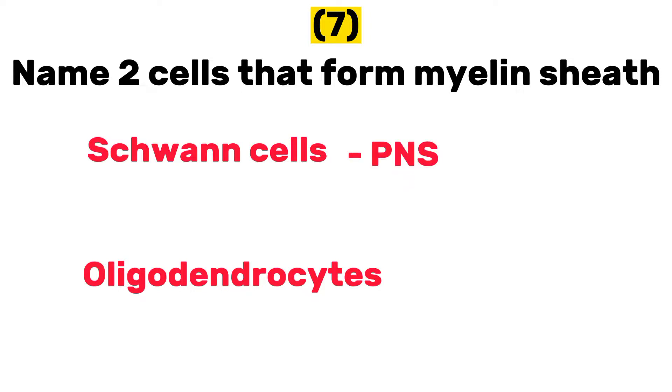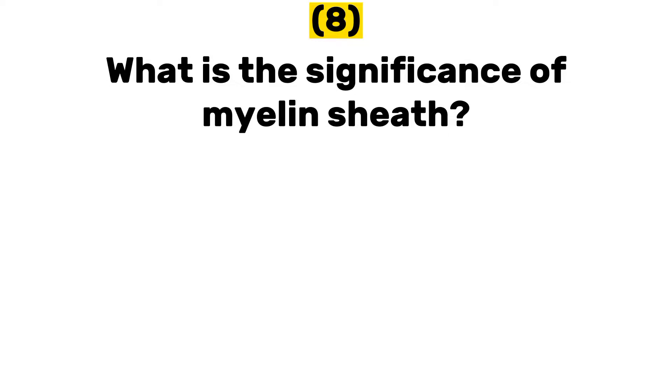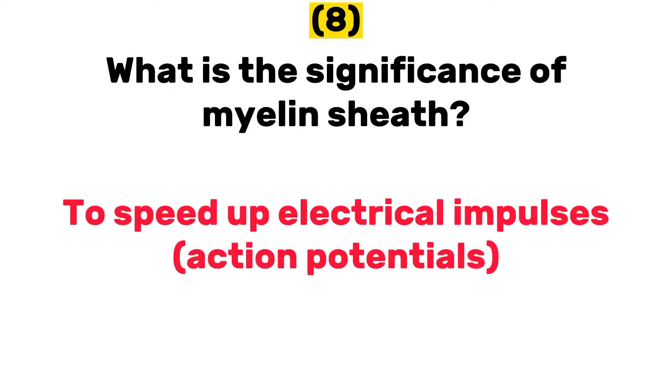Number eight: what is the significance of myelin sheaths? Myelin sheath helps to speed up electrical impulses. So the presence of myelin sheaths facilitates the transmission of electrical impulses within the neuron.